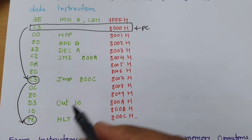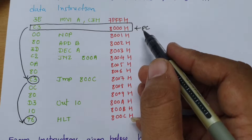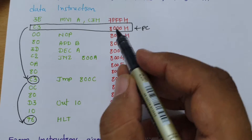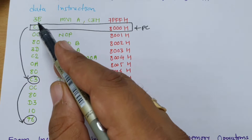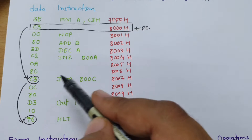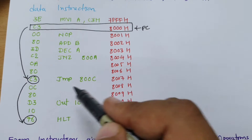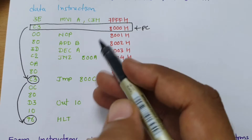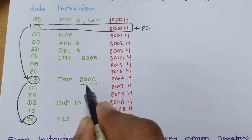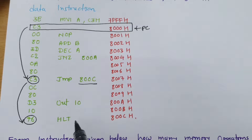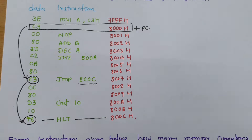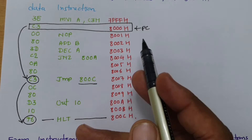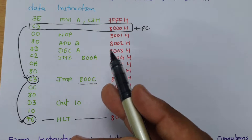So ultimately, if you initiate program execution from memory location 8000H, there is no valid opcode there. It will search for a similar opcode in the program — the opcode C3, which is the JUMP instruction. It will execute that instruction, jumping to memory location 800CH, which is the HALT instruction, and the program will terminate. This is what happens when you initiate execution from 8000H.